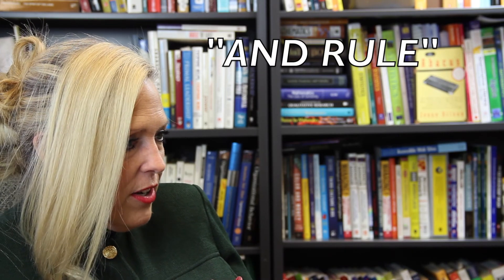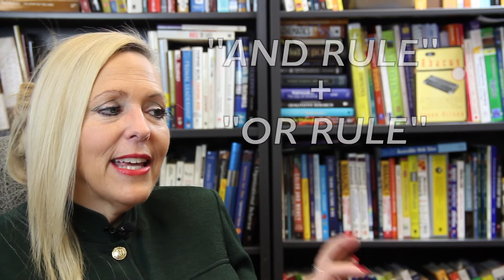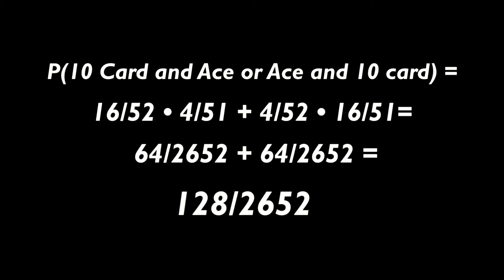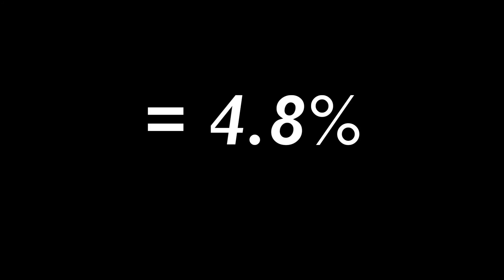The calculation of the probability of blackjack is a bit tricky. But the probability that the first two cards are blackjack equals the probability that you get a 10 card and then an ace, plus the probability of an ace and then a 10 card. You can see we have to combine the AND rule for the ace and the 10 card, and the OR rule because we could get the ace first and then the 10 or the 10 and then the ace. This gives you 16 out of 52 times 4 out of 51, plus 4 out of 52 times 16 out of 51, which equals 128 over 2,652, or .0483, which is a 4.8% chance.